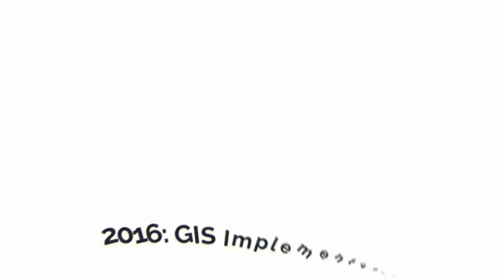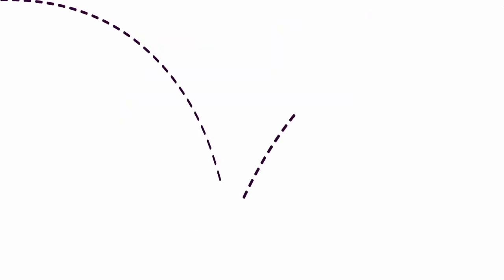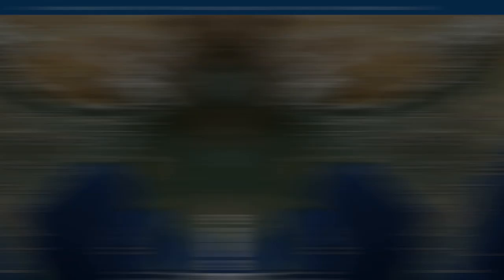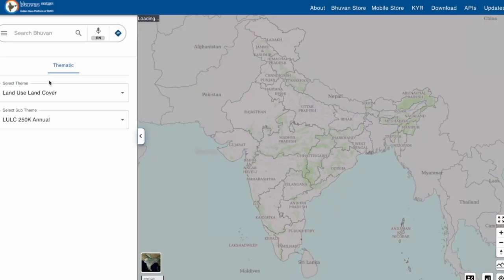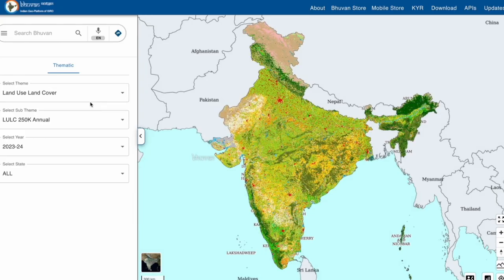By 2016, the integration of Remote Sensing and Geographic Information System technology revolutionized MGNREGA's asset management. GIS provided a single unified view of asset information across rural India.